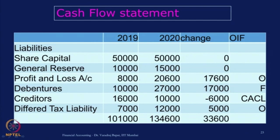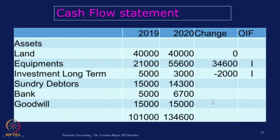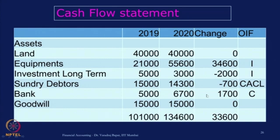Profit and loss account was marked as O; debenture, being a financing item, F; creditors, CA/CL; deferred tax liability, O. For assets, equipment and long-term investments were marked I, and sundry debtors CA/CL. Bank balance is a cash and cash equivalent item, so it should be marked as C — it will not be shown as a flow in the cash flow statement.